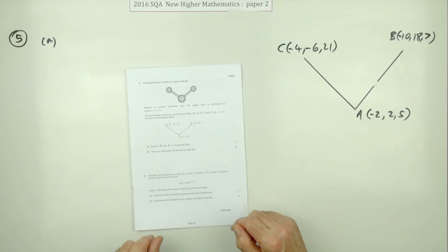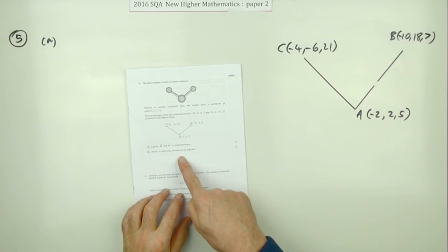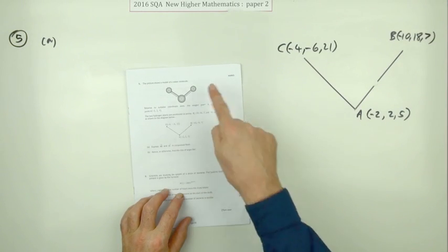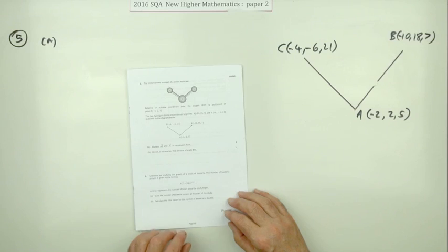Number five then from paper two, the 2016 Higher Maths. Here it is. Find the angle between two vectors, just six marks, usually it's about seven.